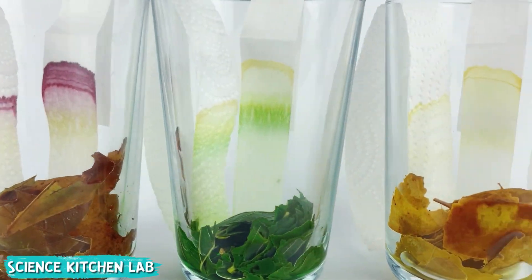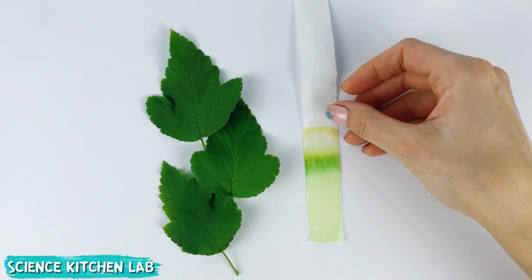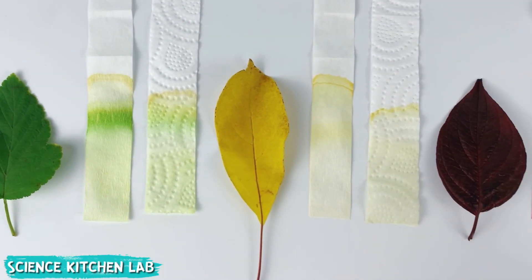We wait 20 minutes and here's the miracle. On the strips we see colorful lines. These are the pigments that were hiding in the leaf. They separated because each one travels up the paper at its own speed.